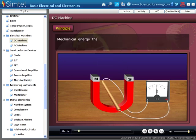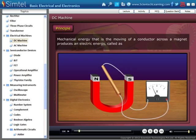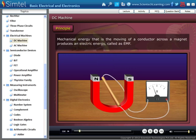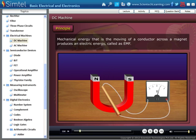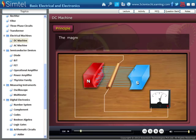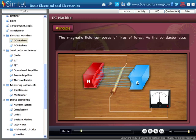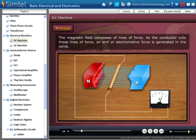Mechanical energy, that is the moving of a conductor across a magnet, produces an electric energy called EMF. The magnetic field composes of lines of force. As the conductor cuts these lines of force, an EMF or electromotive force is generated in the conductor.